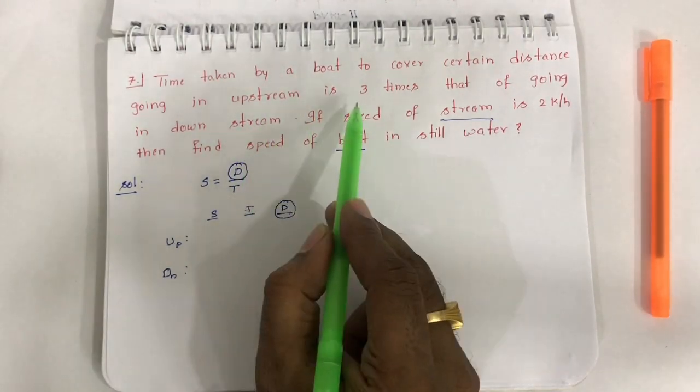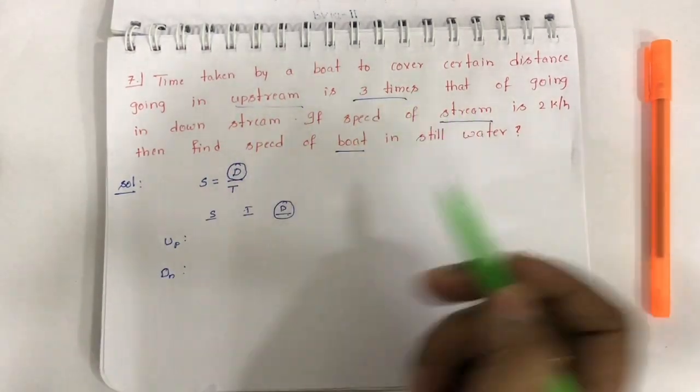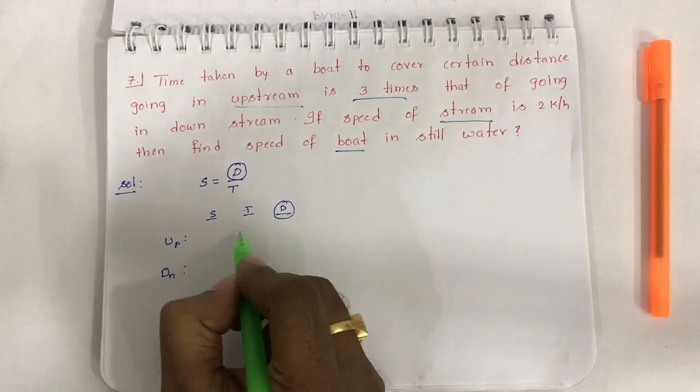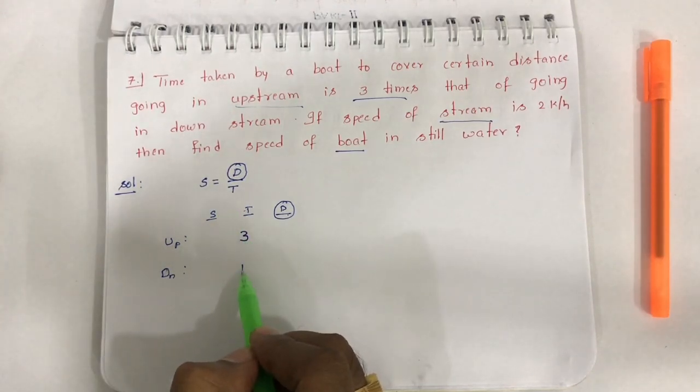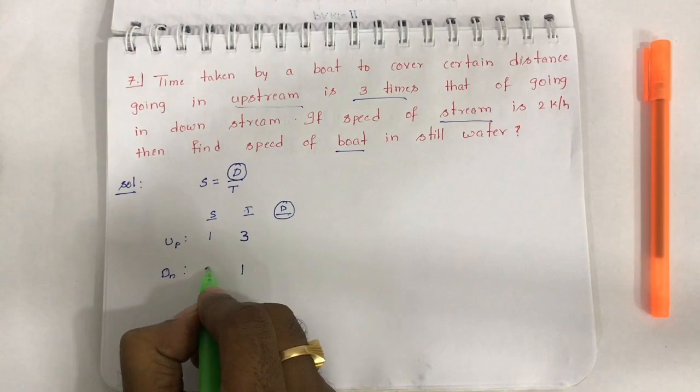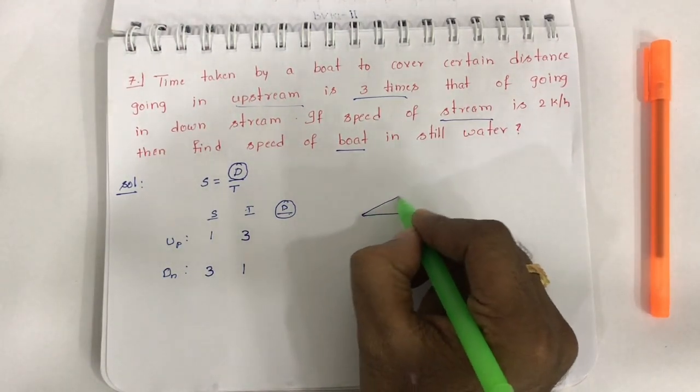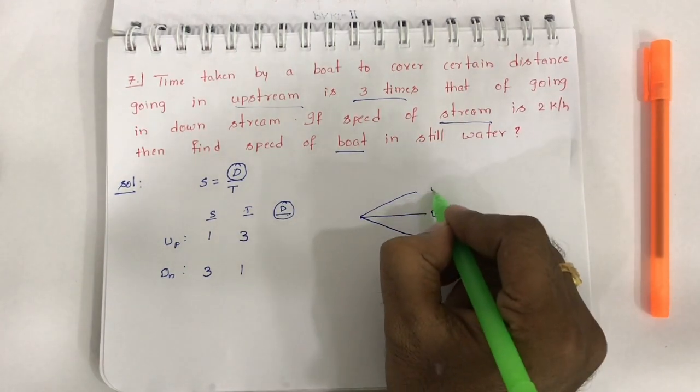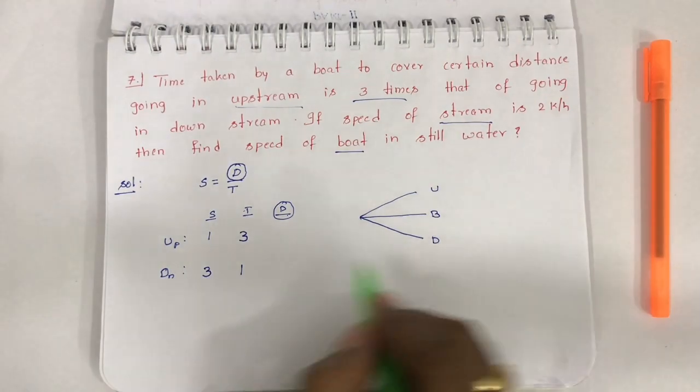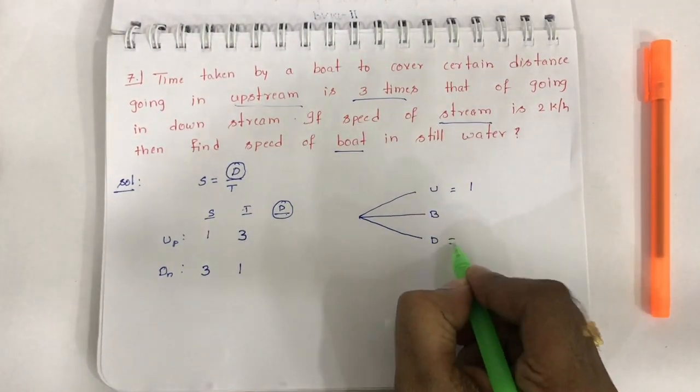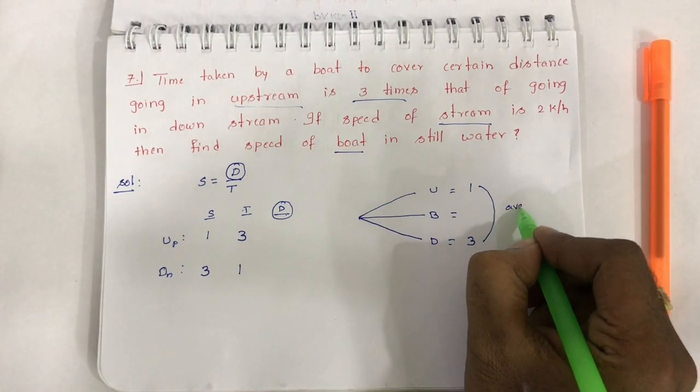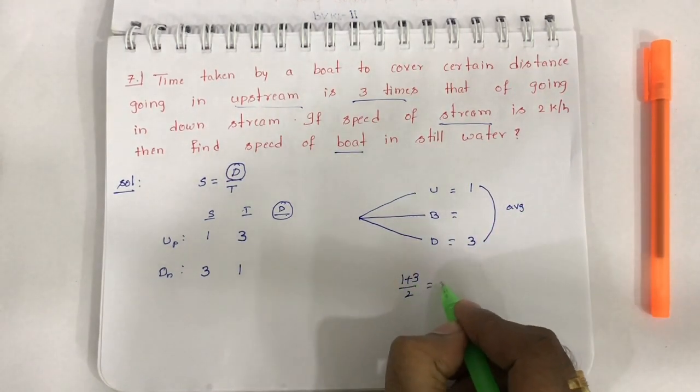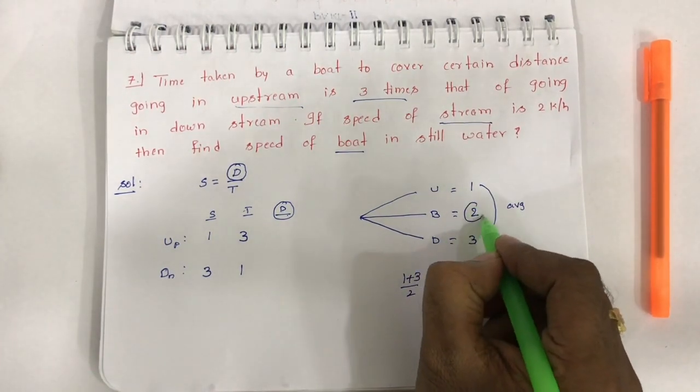Time ratio: upstream time is 3 times downstream. If downstream time is 1 unit, upstream time is 3 units. Speed is inversely proportional to time. So if time ratio is 3:1, speed ratio is 1:3. Up speed is 1 unit, down speed is 3 units.